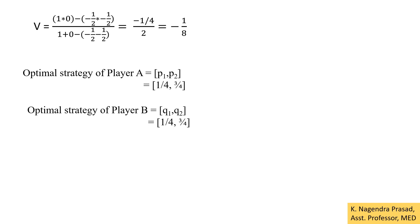The optimal strategy of player A is (P1, P2) = (1/4, 3/4). Similarly, the optimal strategy of player B is (Q1, Q2) = (1/4, 3/4). The value of the game is −1/8. This is the solution of the given problem. Thank you.